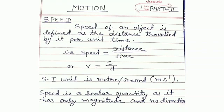There are some other units to measure speed also, which are known as non-SI units. For example, we can measure speed in kilometer per hour or we can measure speed in centimeter per second. Moving ahead, we will know the different types of speed.